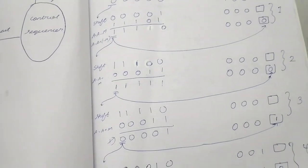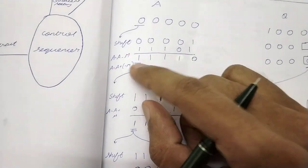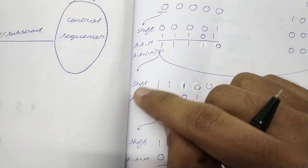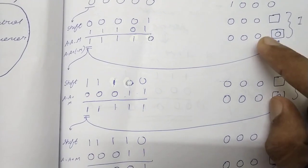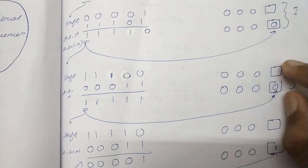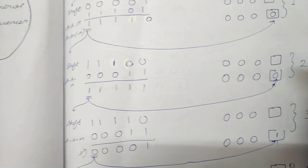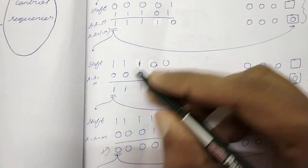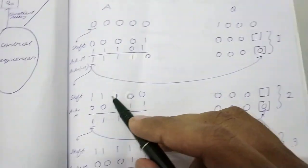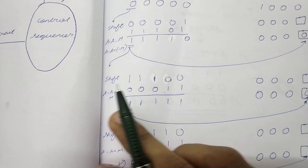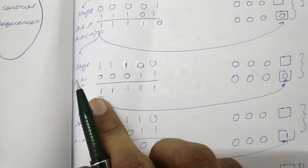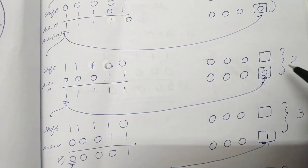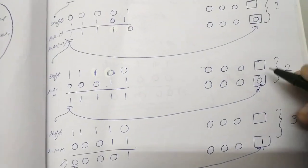Now for the second iteration. The first bit of the A register is 1. When it is 1, we shift and add. First we do the left shift: A becomes 11100 and Q shifts accordingly with a vacant space. Then A = A plus M. We add M to A and perform the addition. Whatever is in the first bit, we take its complement (1 becomes 0) and write it into the vacant LSB of Q. That is the second iteration complete.